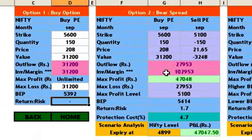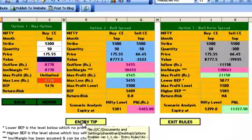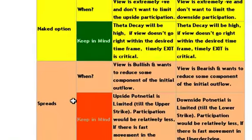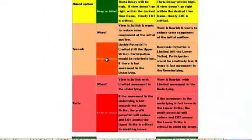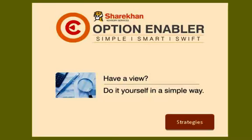Option Enabler allows the client to take an informed decision which gives the best result for a particular view. We have also tried to give entry tips and exit rules which could be used as broad guidelines for both entry and exit. We hope this product will be useful for option traders. This is the first version of the product, and we shall incorporate more strategies or features in the next version.